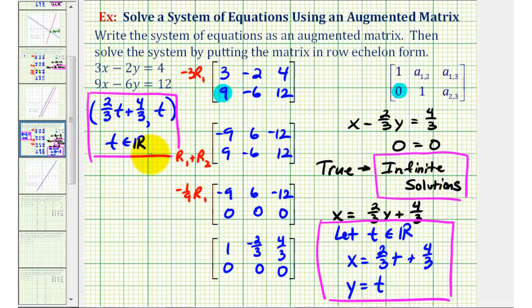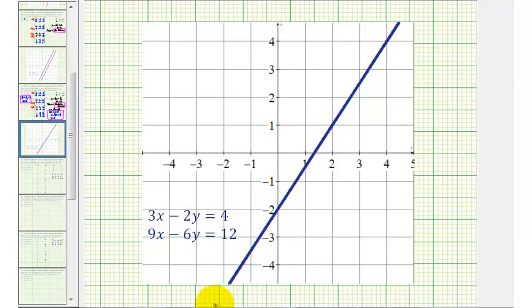Because we have an infinite number of solutions, we can say the system is consistent and dependent. To verify this, let's go ahead and graph these two linear equations on the same coordinate plane. Here's a graph of both lines. Notice it's actually the same line. Therefore, they have an infinite number of points in common, verifying that our system does have an infinite number of solutions.